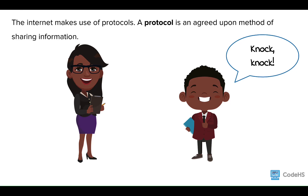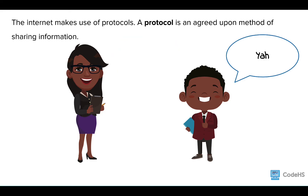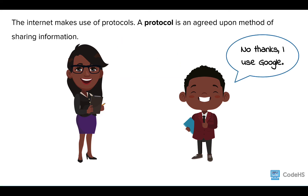A real-life example of a protocol could be a knock-knock joke. Most people understand the rules for telling and listening to a knock-knock joke. The joke teller starts by saying knock-knock. The receiver knows that the appropriate response is who's there. Then the joke continues with each person knowing the rules. Internet protocols work in the same way. A request for information is sent, and the receiver knows how to appropriately respond to that request.